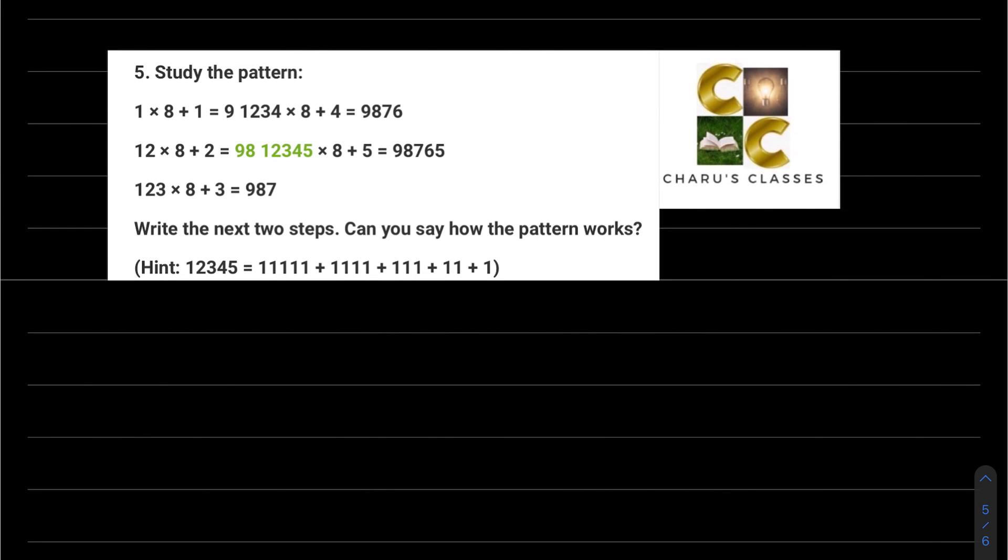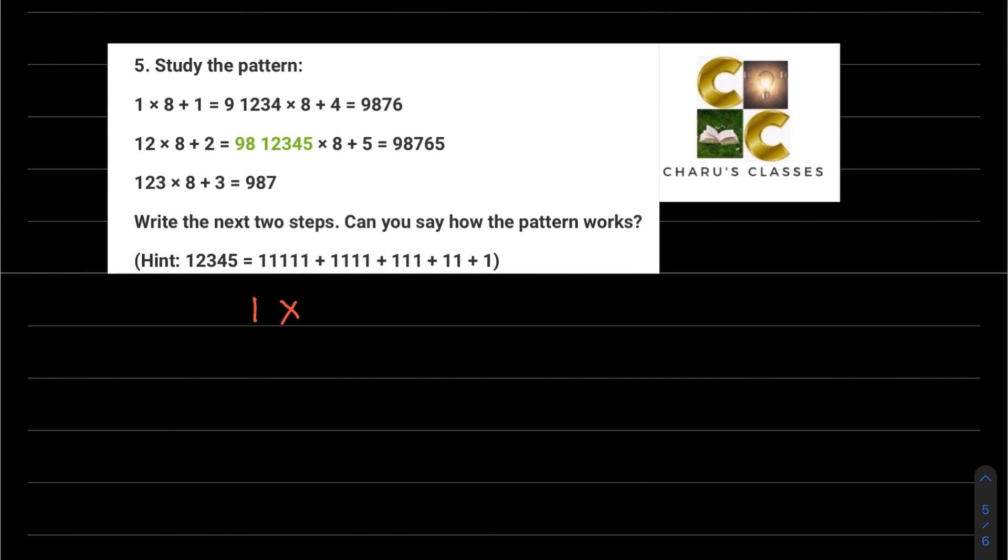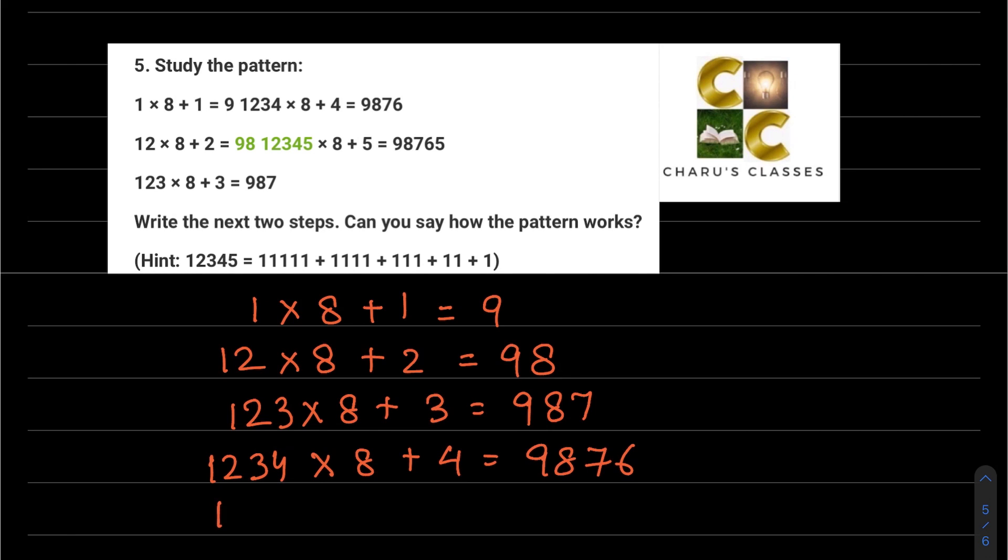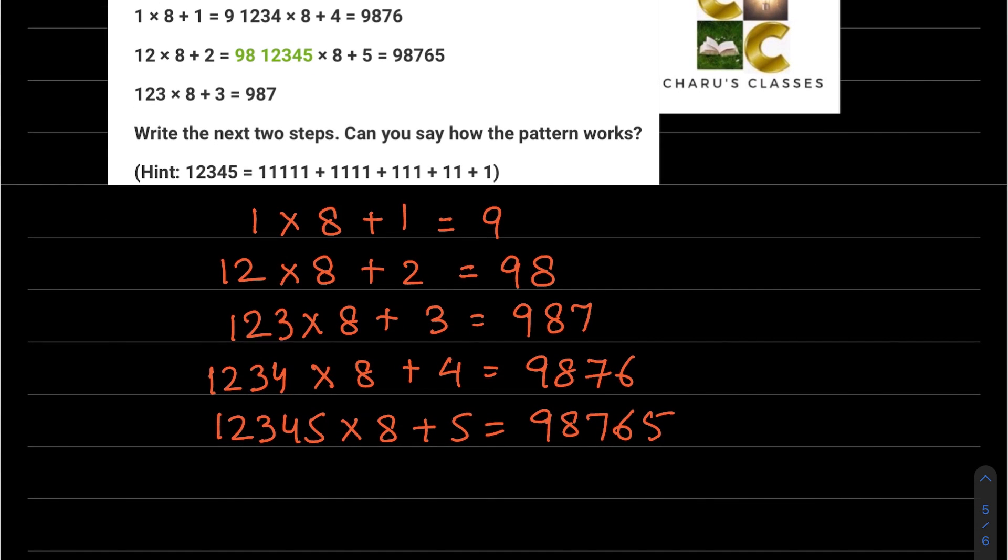Question number 5: Study the pattern. 1 into 8 plus 1 equals 9. 12 into 8 plus 2 equals 98. 123 into 8 plus 3 is 987. 1234 into 8 plus 4 is 9876. 12345 into 8 plus 5 is 98765. Write the next two steps. Can you say how the pattern works?